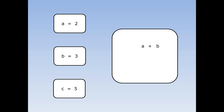In this example, a is 2, b is 3 and c is 5. What's a plus b? We swap a for a 2 and b for a 3. 2 plus 3 is 5, so a plus b equals 5.